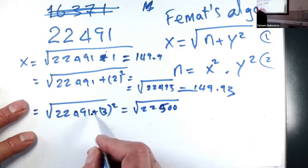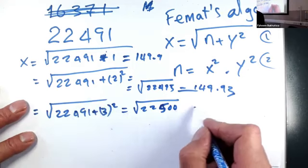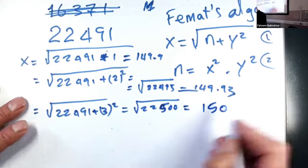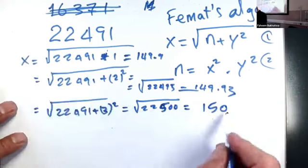So three squared is nine, plus one is ten, and that makes it 500. And what's the square root for that? 150. So that's what x equals.